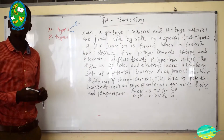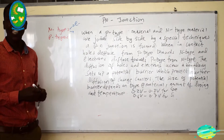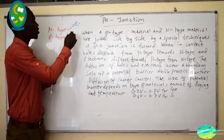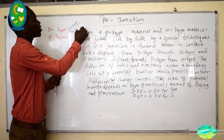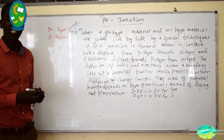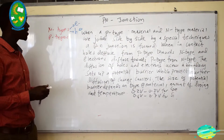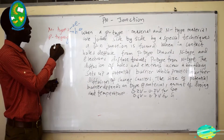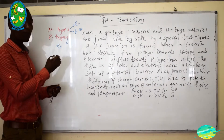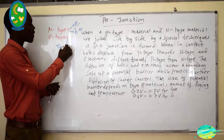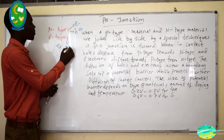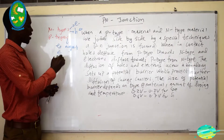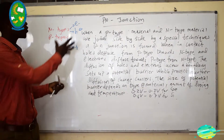In N-type material, electrons are the majority charge carriers, whereas holes or positive charges are minority charge carriers. In P-type material, holes or positive charges are the majority charge carriers, while electrons are the minority charge carriers.